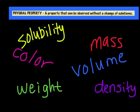Now that we know the difference between physical and chemical changes, we can consider a substance based on its physical and chemical properties. A physical property is a property that can be observed without a change of substance. Some examples of physical properties include solubility — does it dissolve or does it not dissolve — color, the weight of the substance, mass, volume, and density, which is just mass over volume.